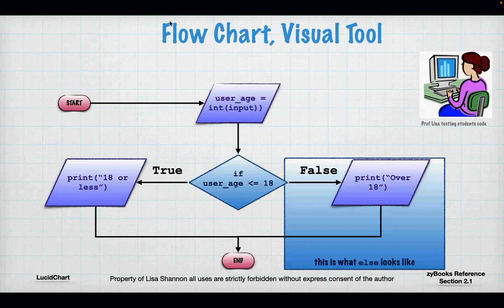This is why it's called branching — you will see branches coming off that diamond. We see two branches here. If you've got a really complex statement, you break it down into if, elif, and else tracks.